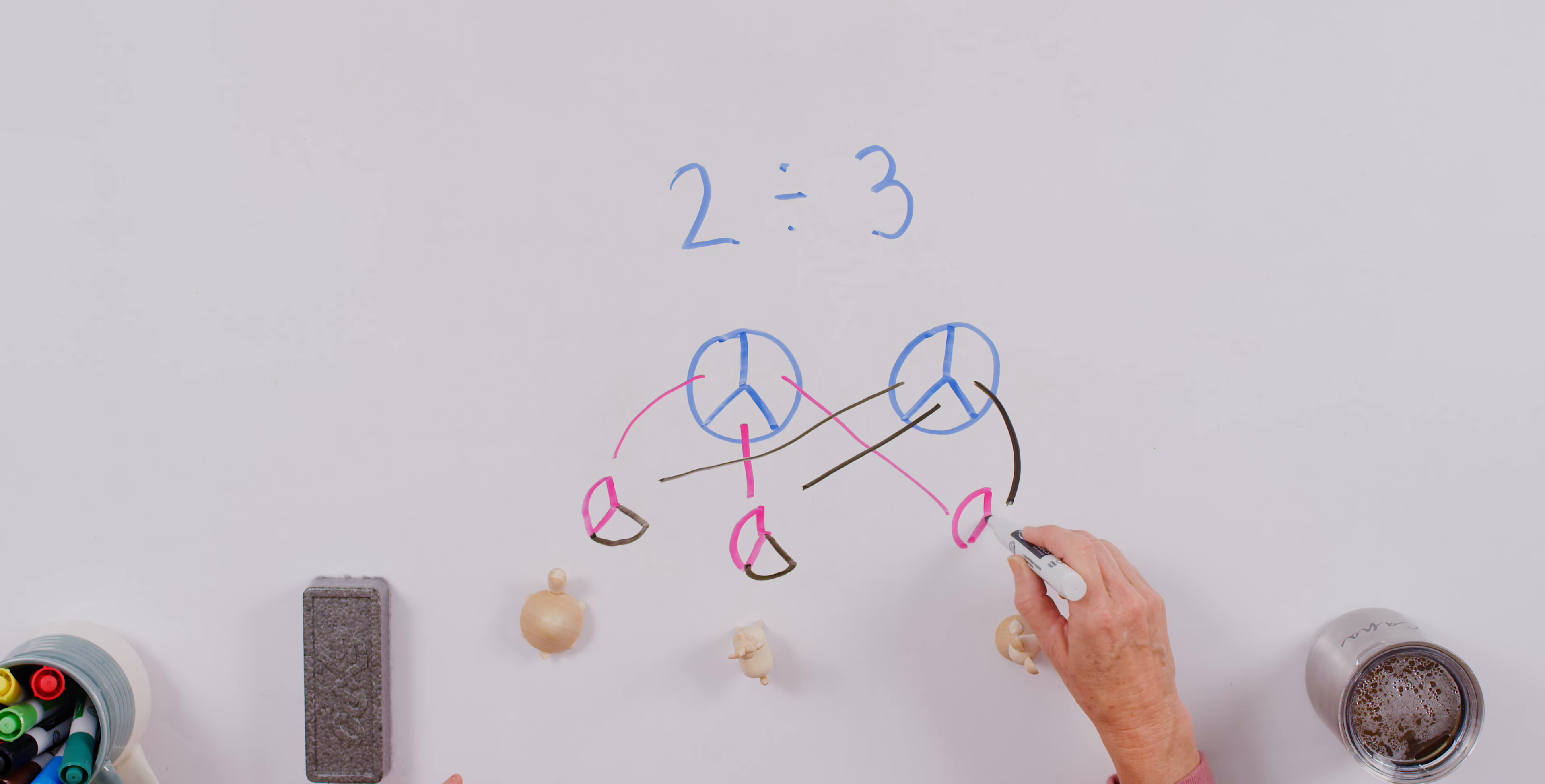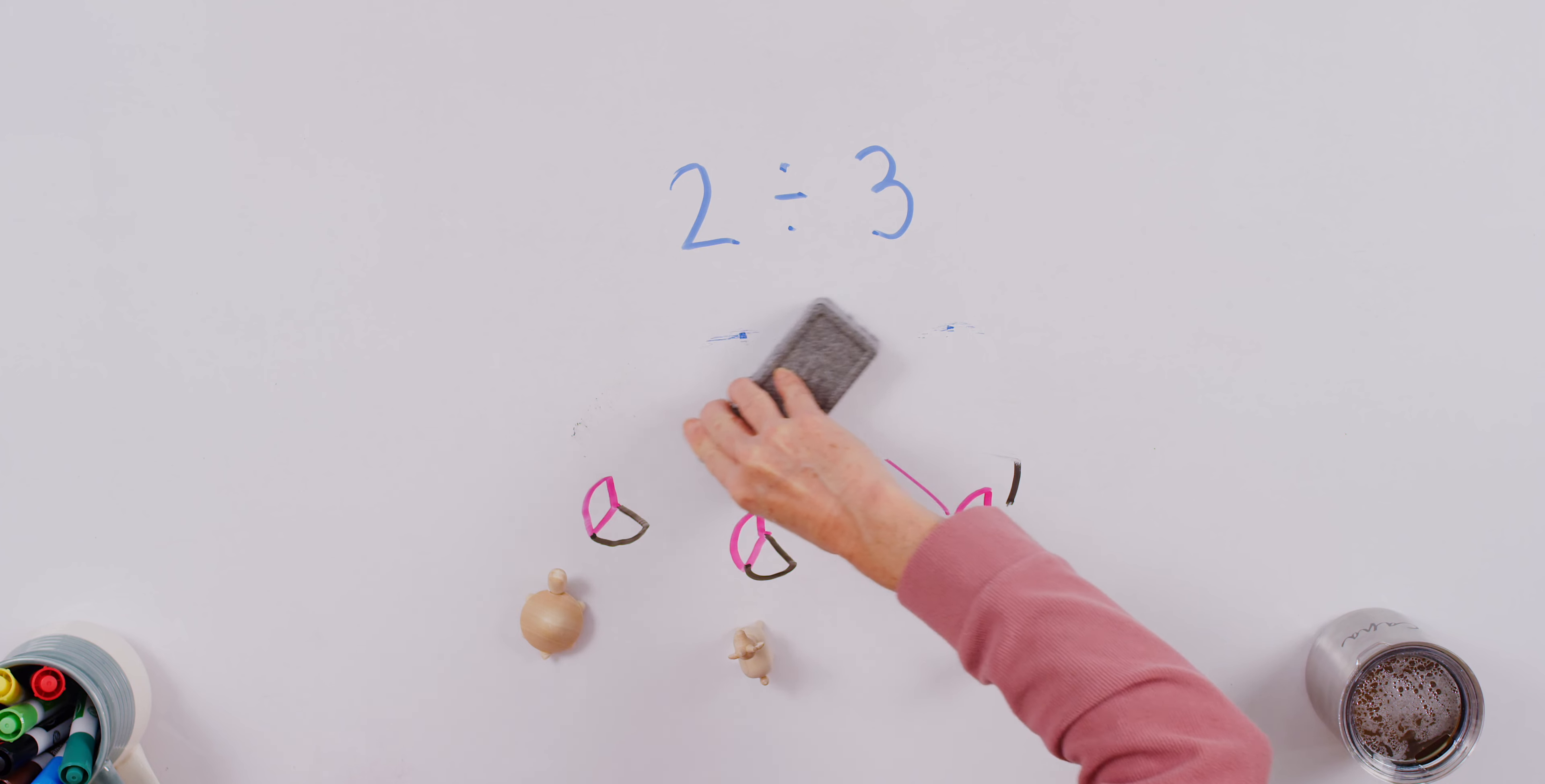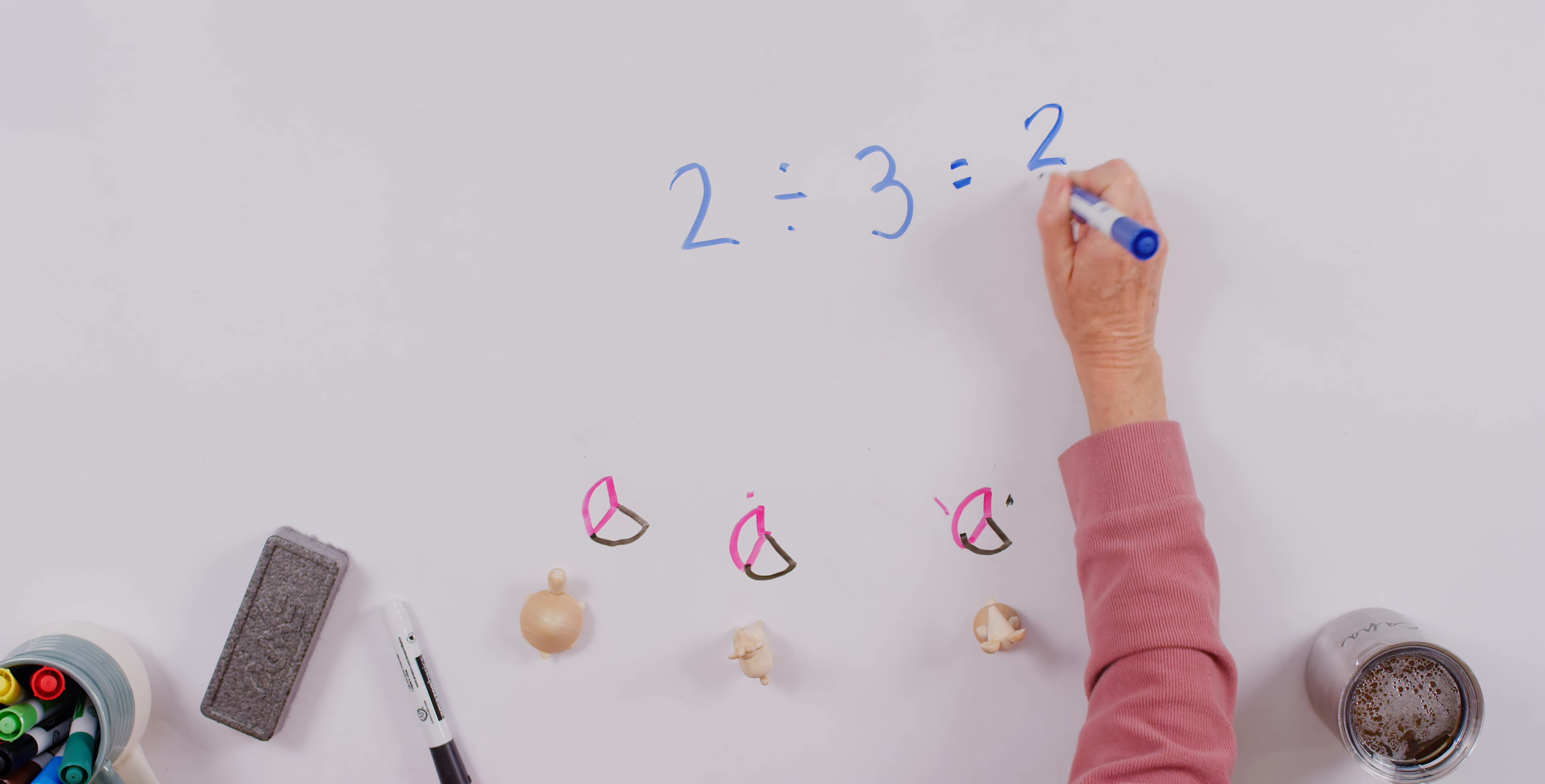All right. Now, we have distributed our two cakes, so I'm going to erase them. How much of the cake does each friend have? Each friend has one, two out of three pieces, or we can say two-thirds.